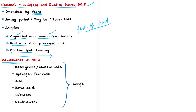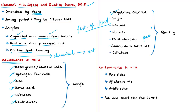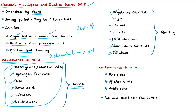According to FSSAI, there are 13 common adulterants in milk. An adulterant is a substance that is not legally allowed but is added to food by unscrupulous elements for excessive profits. The 13 common adulterants present in milk are: detergents or caustic soda, hydrogen peroxide, urea, boric acid, nitrates, neutralizer, vegetable oil or fat, sugar, glucose, starch, maltodextrin, ammonium sulfate, and cellulose. Of these, six adulterants are not safe for human consumption, and six are not injurious to health but are undesirable from a quality point of view.